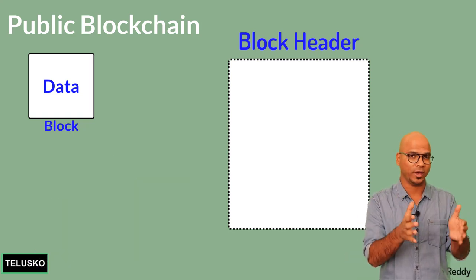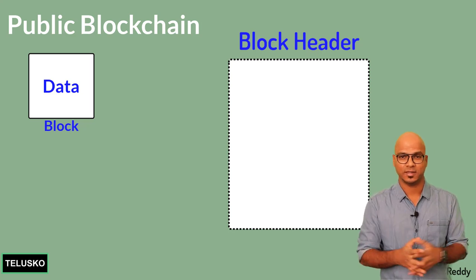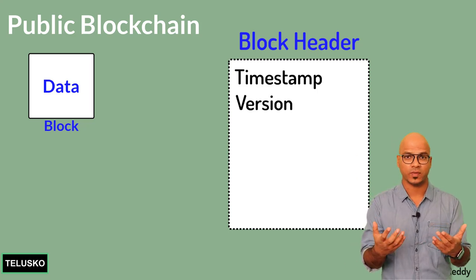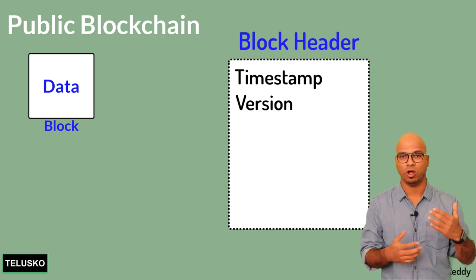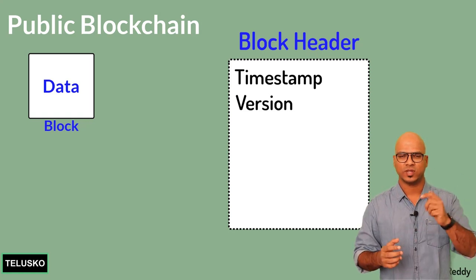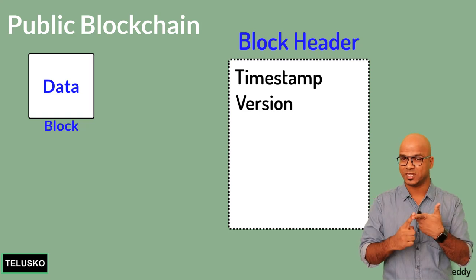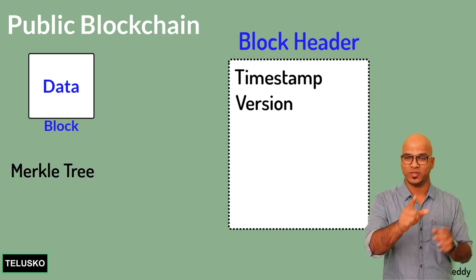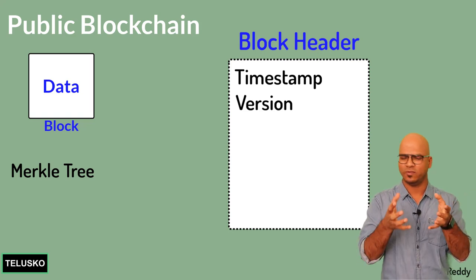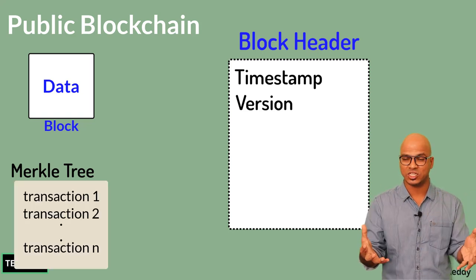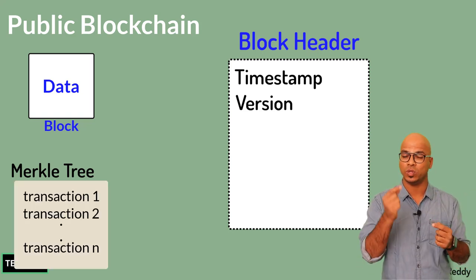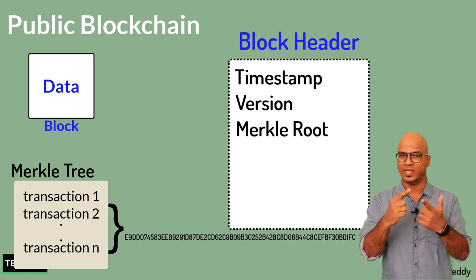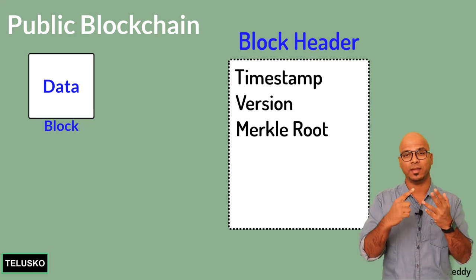The first field in the block header is a timestamp — so we know when the block was created. The second field is a version, indicating the protocol version being used. We also have a Merkle root: since one block can have many transactions, the Merkle tree gives us a single hash representing all of them.